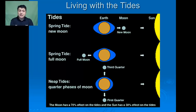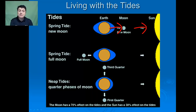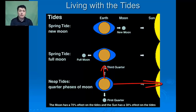Spring tides occur two times a month, during a full moon and a new moon, when the Earth, Sun, and Moon are lined up. Spring tides are higher and lower than normal tides, due to the fact that both the Moon and the Sun are pulling in the same direction. Neap tides occur in between spring tides, at the first and third quarters of the Moon, when the Sun and Moon are pulling at right angles to each other. As a result, neap tides are not as high as normal tides — they are typically a weak tide.